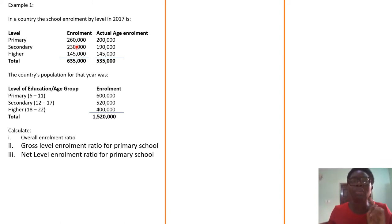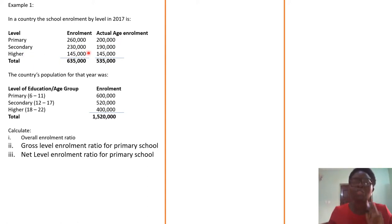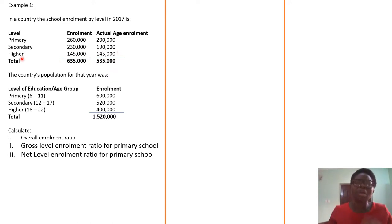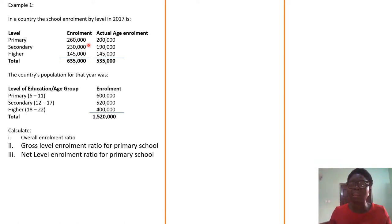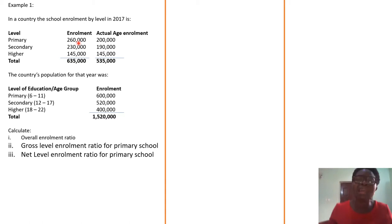Out of the 260,000, the actual age that fall within that enrollment is 200,000. At the secondary school level, you have 230,000 enrolled, and out of 230,000, only 190,000 actually fall within the age. For primary enrollment, you are supposed to be between the age of 6 to 11. So some that are enrolled may be 15 or 18 years old — not supposed to be in primary school, but they are there. This is the reality on the ground.